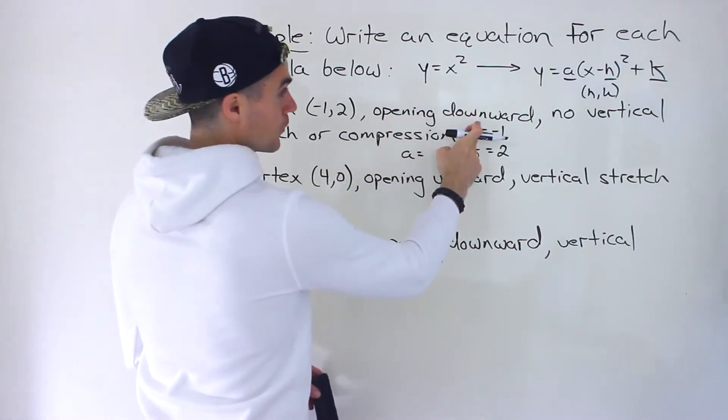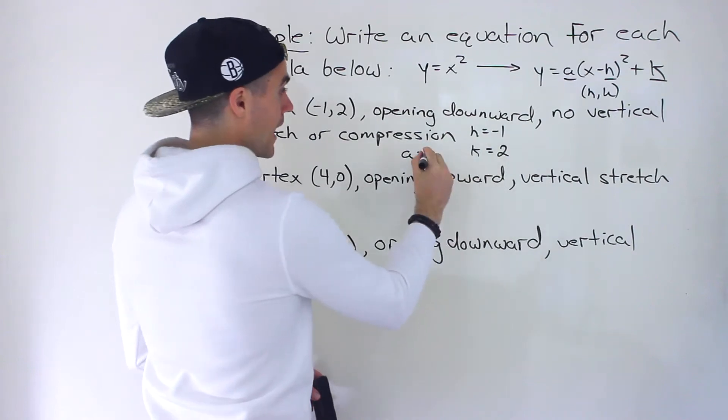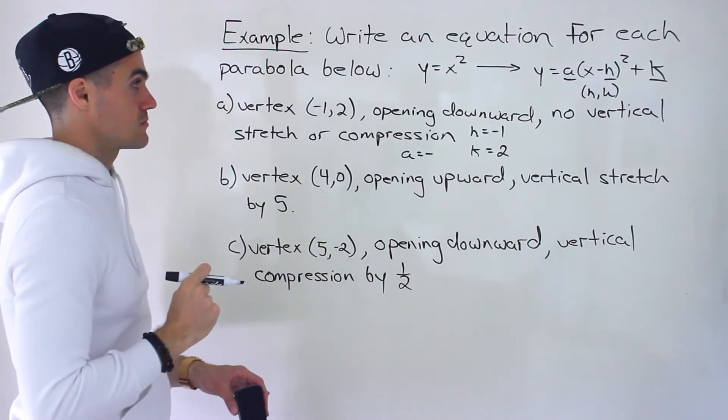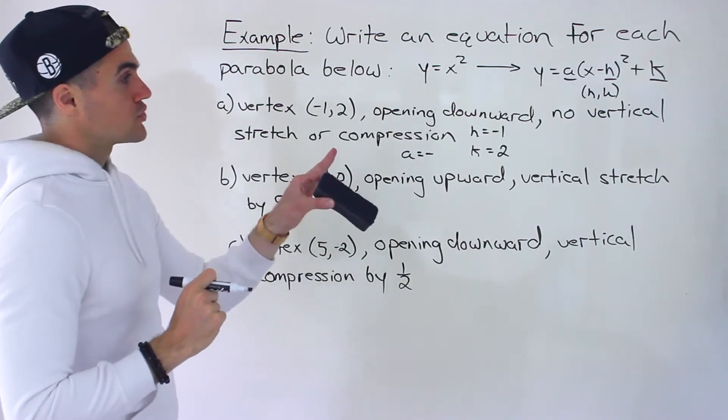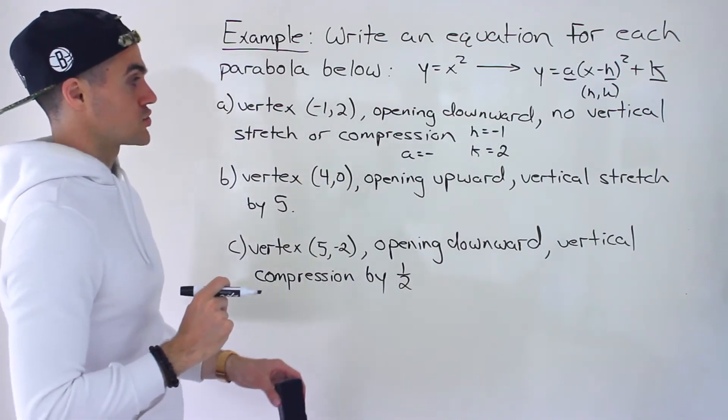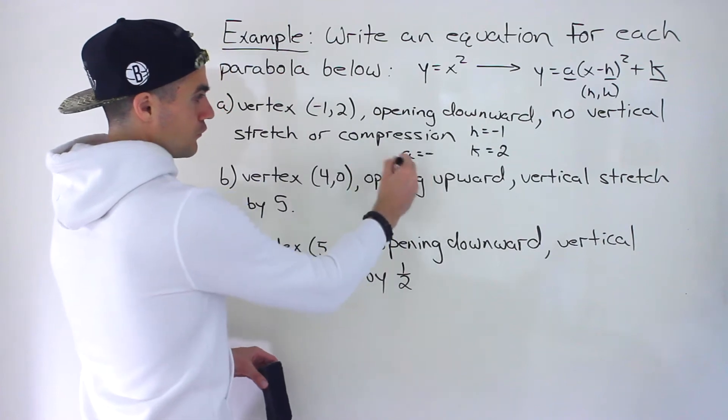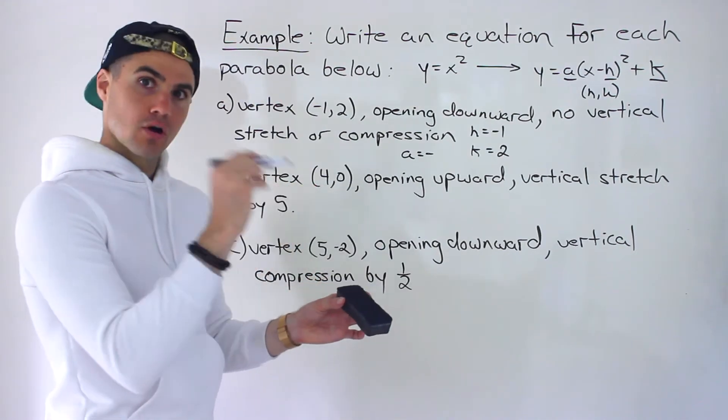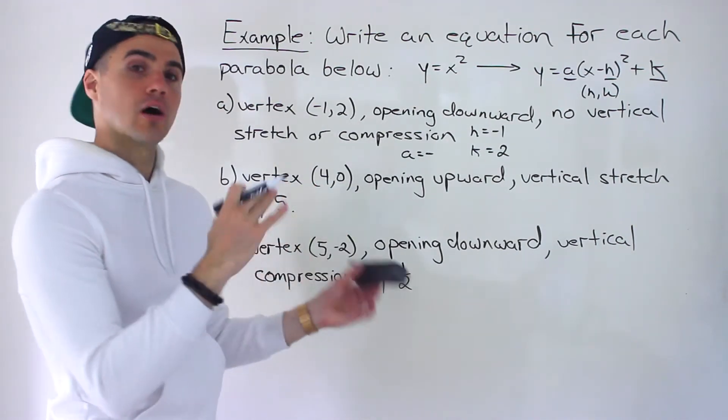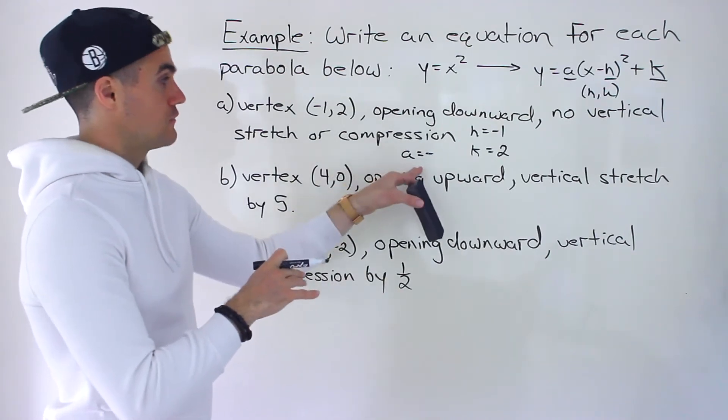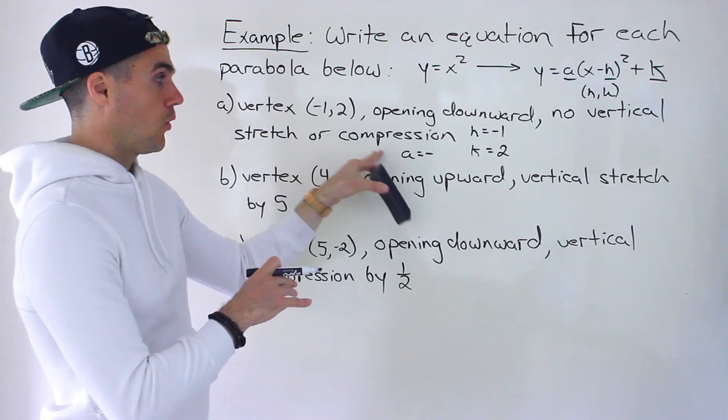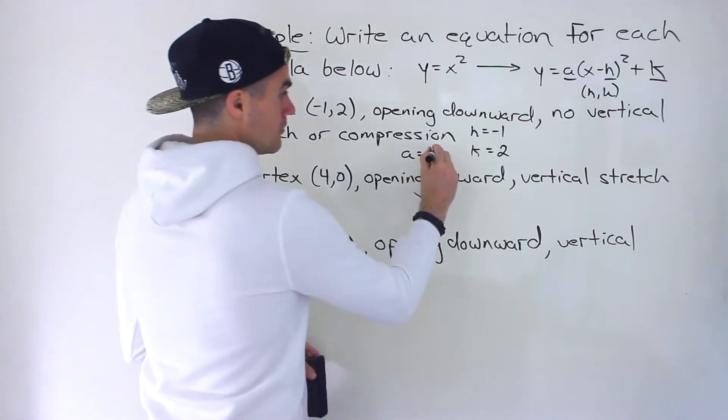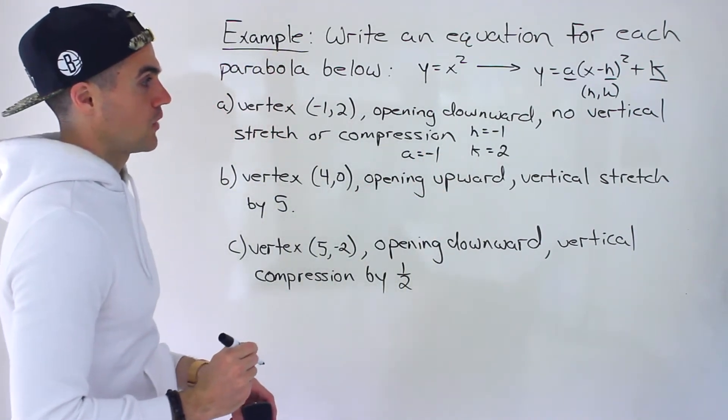The rest of the description is going to allow us to find out what the A value is. Now, notice we're told it's opening downwards. Whenever that happens, we know that A value is negative or the y equals x squared has been reflected in the x axis. Both of those mean the same thing. And then we're told there's no vertical stretch or compression. For a negative A value, there was three cases. Either the A value is between zero and negative one, then there's a vertical compression. The A value can be negative one, there's no vertical stretch or compression then, or it's less than negative one, meaning there's going to be a vertical stretch.